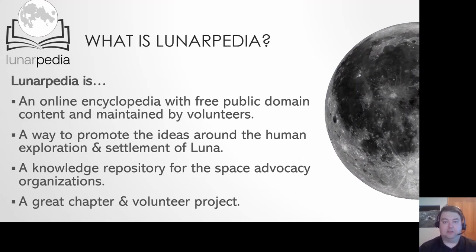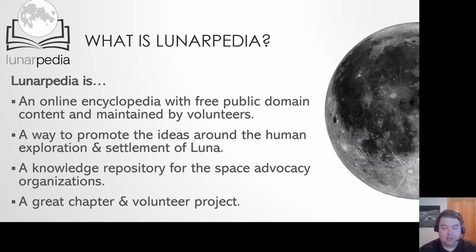Lunarpedia is an online encyclopedia that uses wiki technologies — the same software that runs Wikipedia. The software is called MediaWiki and that's what we use for Lunarpedia. There are a lot of the same features, syntax, extensions, and other technical things that Wikipedia has, making it a very rich environment for people maintaining content.